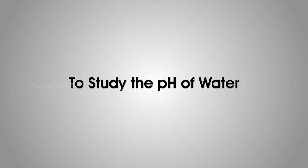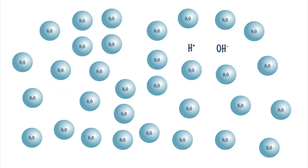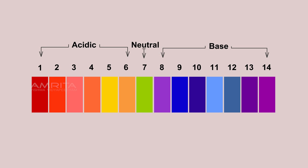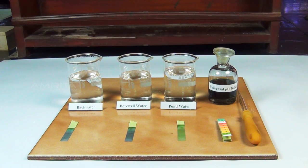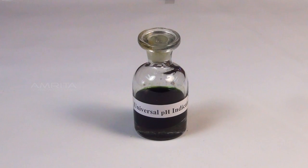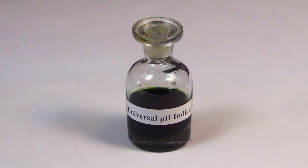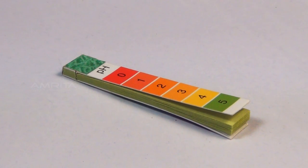To study the pH of water. The pH is a measure of the relative amount of free hydrogen and hydroxyl ions in an aqueous solution. Solutions with a pH less than 7 are said to be acidic and with a pH greater than 7 are basic. The pH of pure water is 7 at 25 degrees Celsius. The pH value of water sample can be determined by using universal pH indicator solution or pH paper strips.